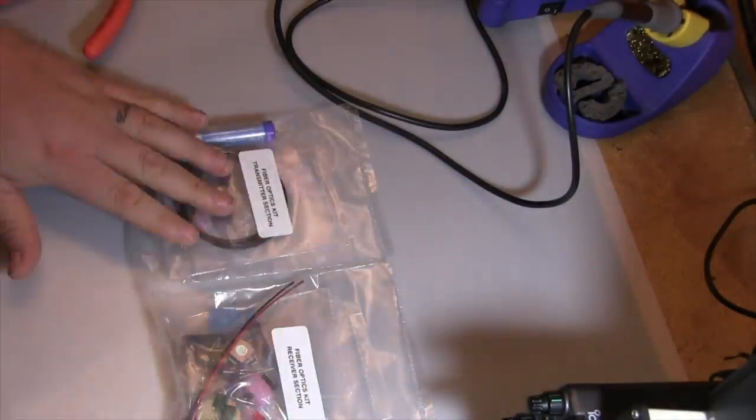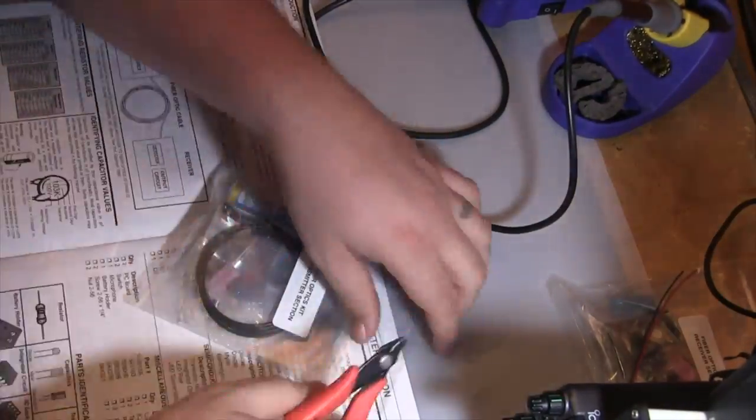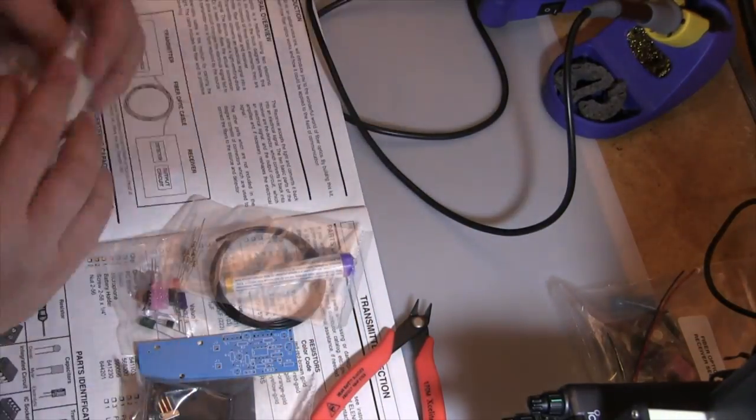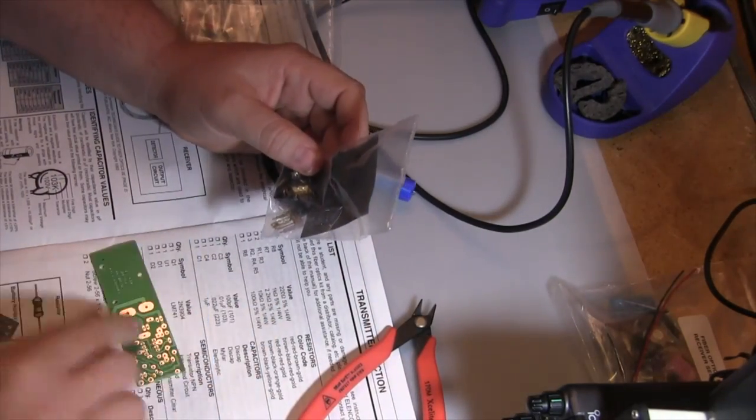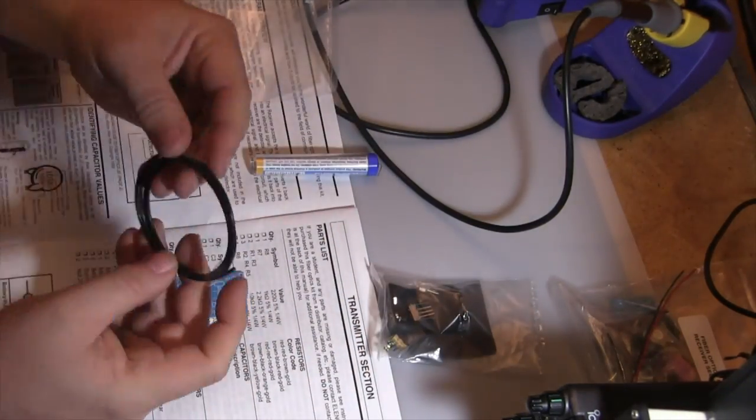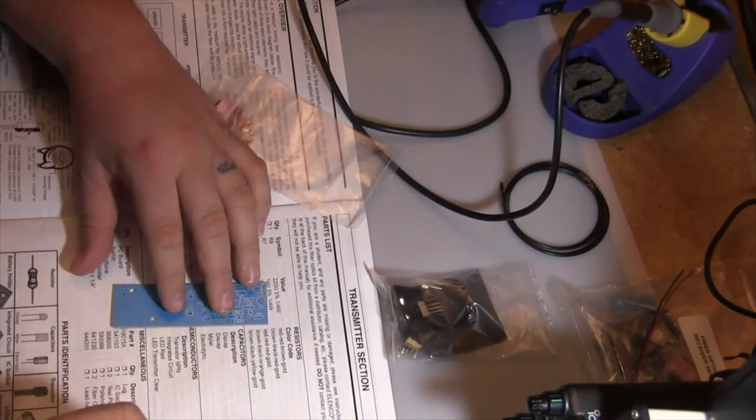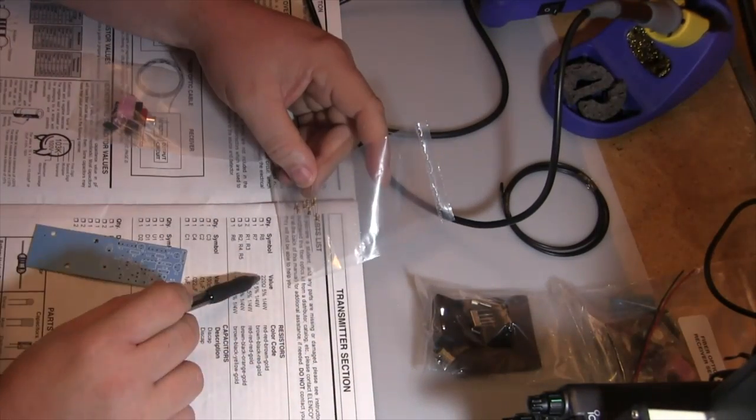I'm voicing over this because the original audio became corrupted for some reason. I'm opening up the transmitter kit package, which had the most components. You see here a printed circuit board, fiber optic cable, solder, and a checklist of everything that came with it.